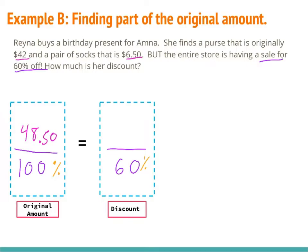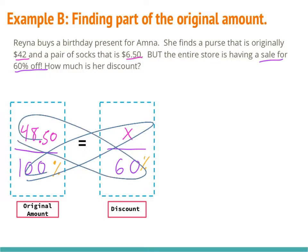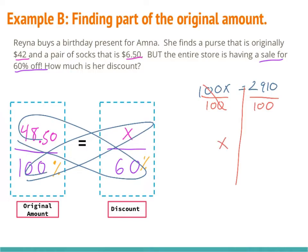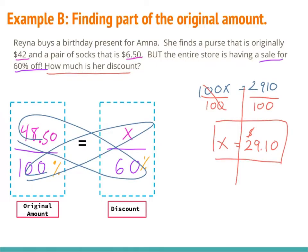Now I need to figure out what the discount is — I don't know that, so that's going to be my x. Cross multiplying: 100 times x gives 100x, and 60 times 48.50 gives 2,910. Drawing the wall and dividing both sides by 100, the 100s cancel, leaving x equals $29.10. This is a word problem so I need a word answer. The question only asked how much the discount is — so the answer is $29.10, and no further adding or subtracting is needed.